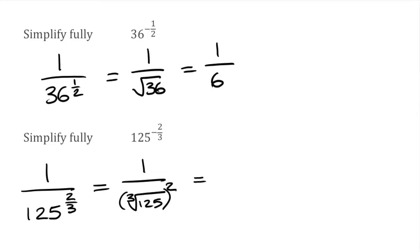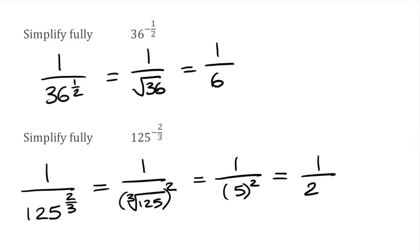Simplifying further, we've got 1 over — if we look inside the bracket, we've got the cube root of 125, which is just 5, but then we have to square it. So we've got 1 over 5 squared, which is 25. So the final answer to this one would be 1 over 25.